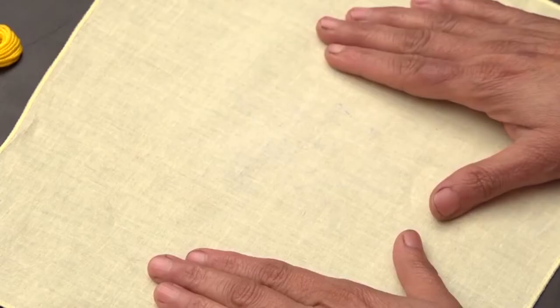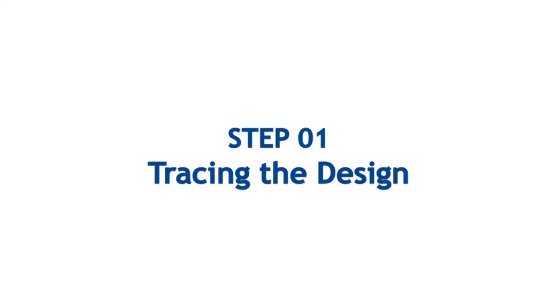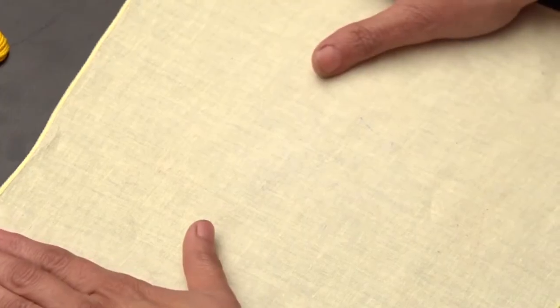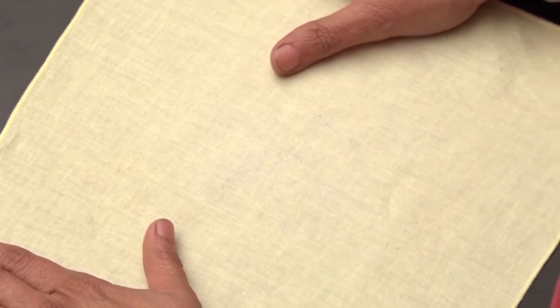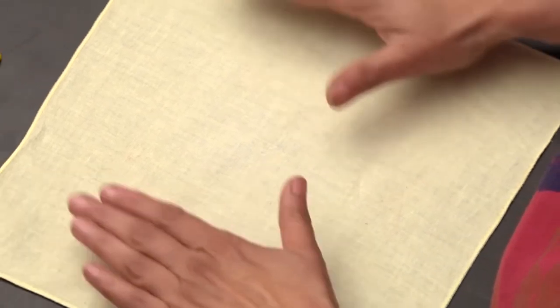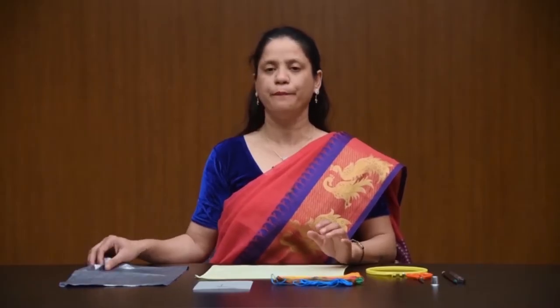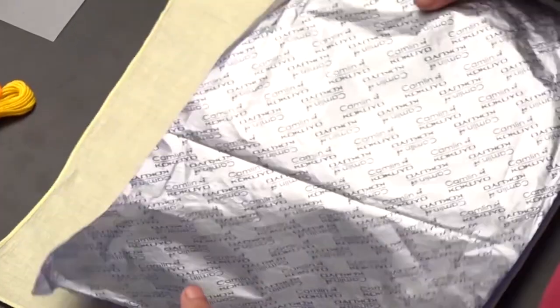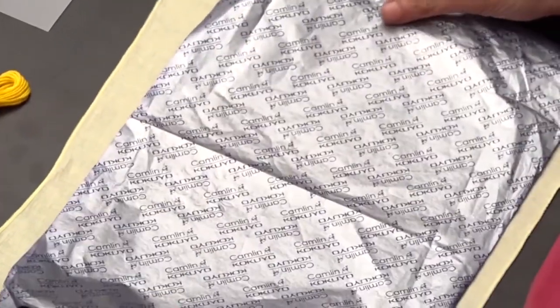Before starting the embroidery work, the fabric should be clean, starch free, and ironed. Trace the design on the fabric through carbon paper. First, place the fabric on an even, neat and clean surface. Then place the carbon paper onto the fabric.